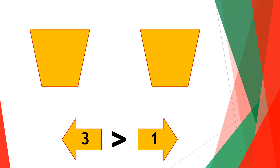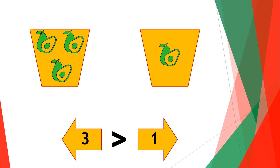One, two, three and one — this means that three avocados is more than one avocado, so that clearly shows that three is greater than one.